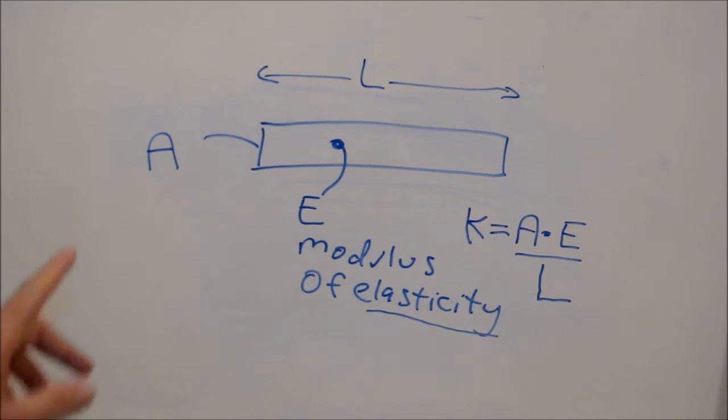So in essence, if we have a rod where we know the area, we know the material that it's made out of so we can look up the modulus of elasticity for it, and we also know the length, we can determine what its spring rate is. So in a sense, you can think of a solid bar of material as a spring.